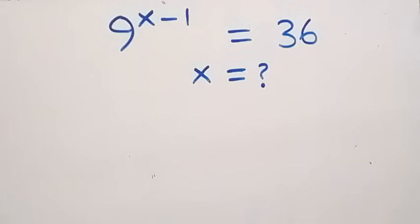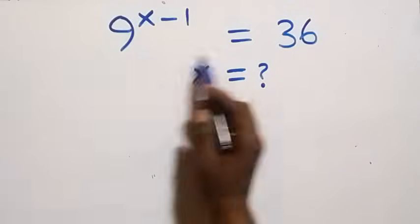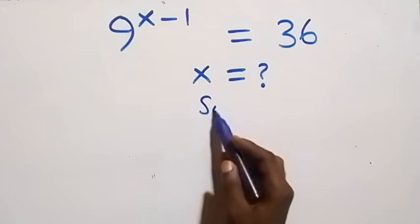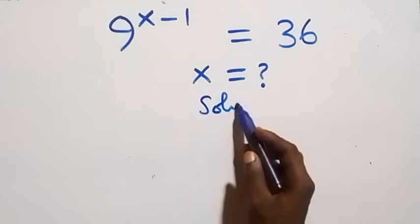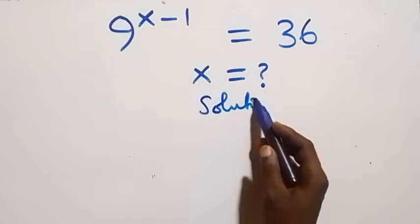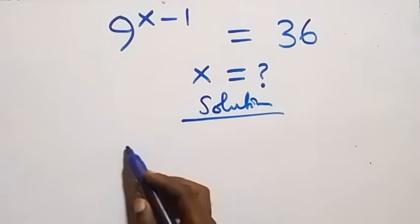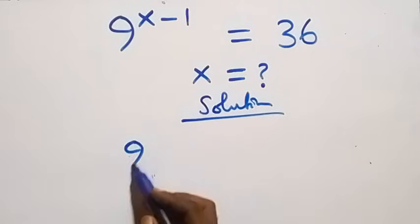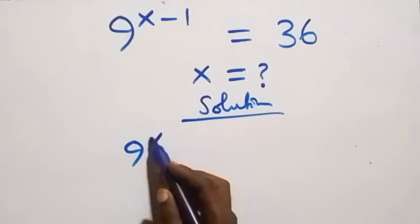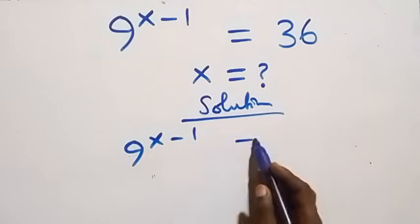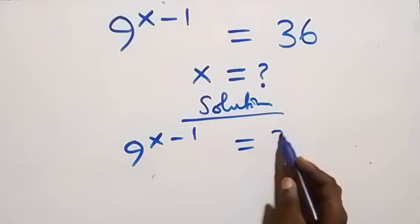Hello, you're welcome. How to solve this nice exponential equation. What we have here is 9 raised to power x minus 1, equals to 36.